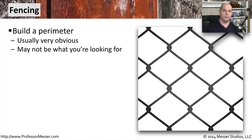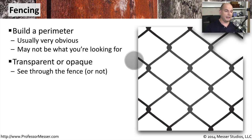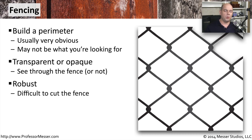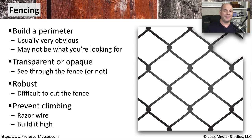Building a fence creates a perimeter for physical security, and it's a very obvious form — which may not always be what you want, since it signals there's something valuable inside. Many fences are chain link, which are transparent. You may have good reason to use a more opaque fence to prevent people from seeing what's on the other side. Fences make very good physical borders because it's difficult to get through heavy steel or concrete fences, and building one high enough makes it very difficult to climb over. You could also add razor wire at the top for additional deterrence.